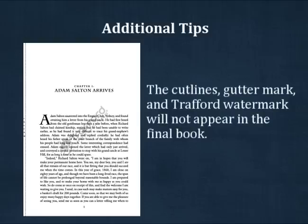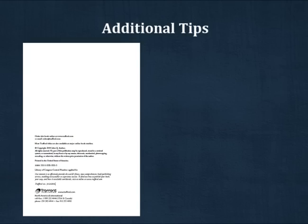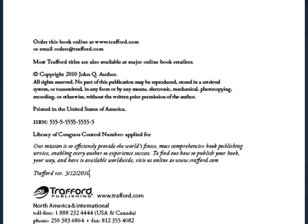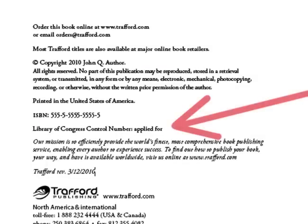The cut lines, gutter marks, and watermark visible in your interior will not appear in the final book. If you have purchased a Library of Congress control number, this number may not appear in your interior until after the book has been submitted to the printer. This is the only item that will be added to your book after you have approved it.